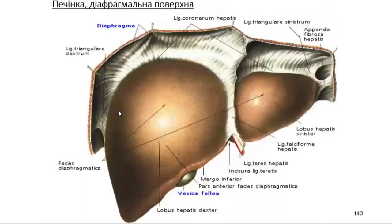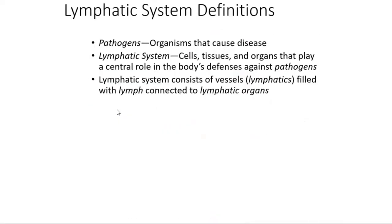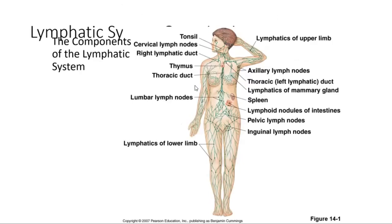The lymphatic system definition: the lymphatic system consists of vessels and lymphatic organs connected by lymph. Pathogens are found in lymph — an organism that causes disease. The lymphatic system cells, tissues, and organs play a central role in the body's defense against pathogens. Components include tonsils, lymphatic vessels, lymph nodes, and the thoracic duct.